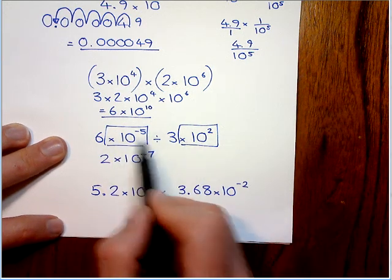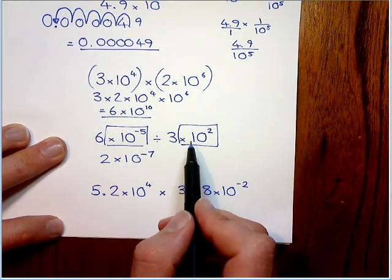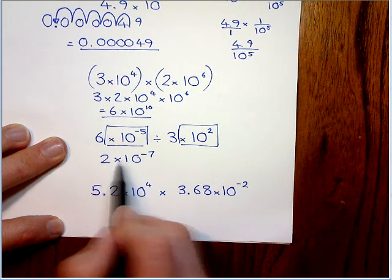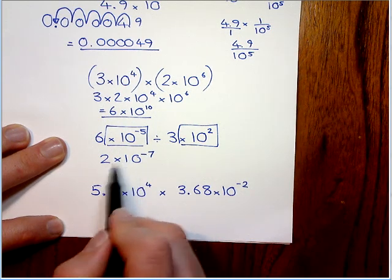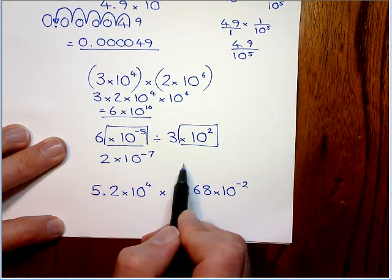So they will either say leave your answer in standard form or they'll write the number out in full. So I would do it in standard form first. And this one would be 0.60s and then a two.